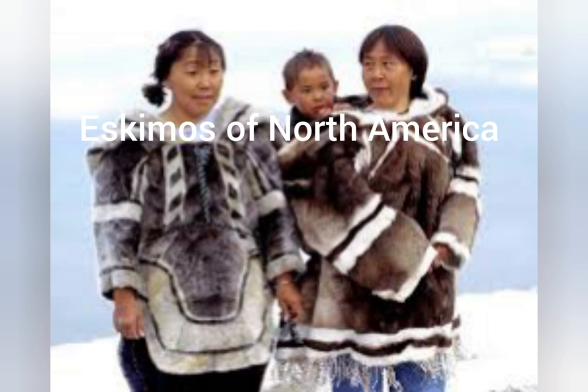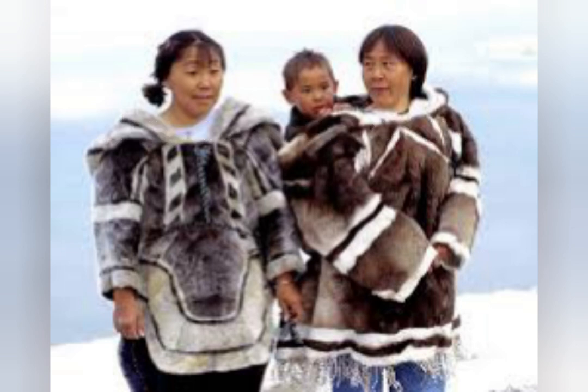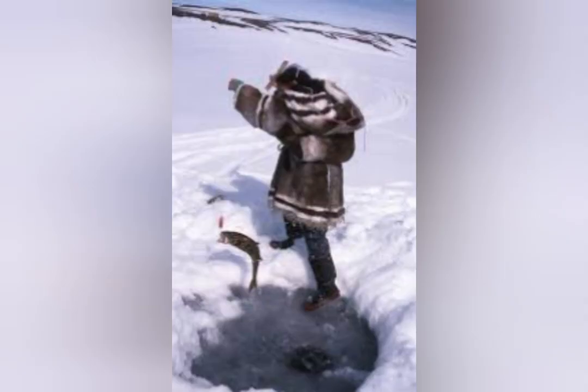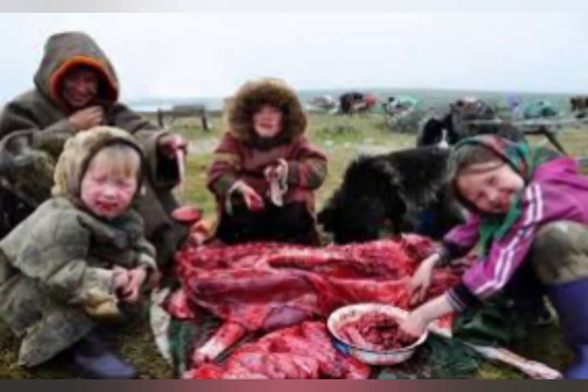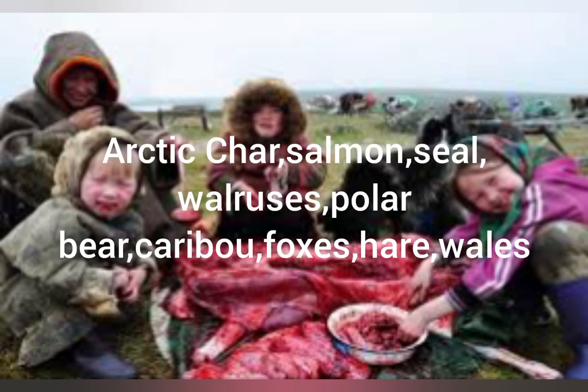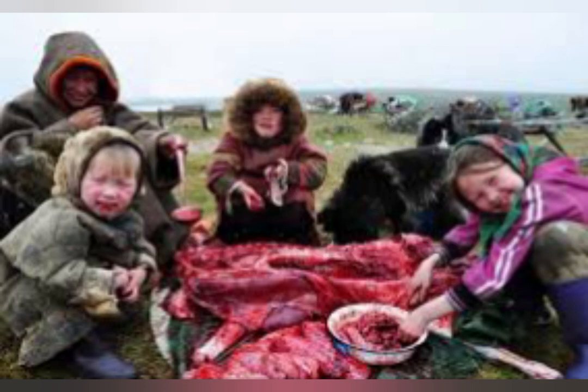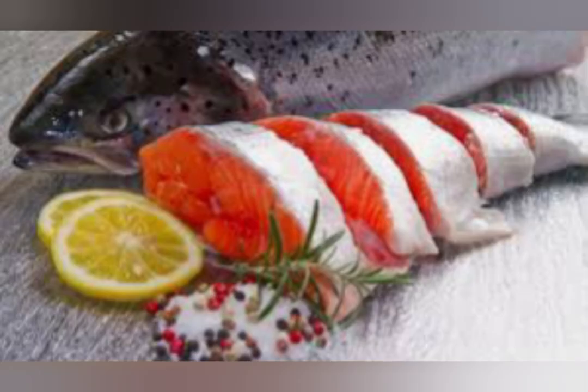Eskimos are natives of North America who live by hunting and fishing. They spend time hunting, fishing and trapping, especially in summer months. In winter, fish remain under the ice along the seacoast, and holes are dug into the ice to catch them. Fish and meat form a very important part of their diet — arctic char, salmon, seal, walruses, polar bear and caribou are the main food sources that help them survive cold winters. They usually consume meat raw and eat lots of fat to keep warm. Women serve their husbands spoonfuls of liquid fat to keep them healthy during hunting expeditions.